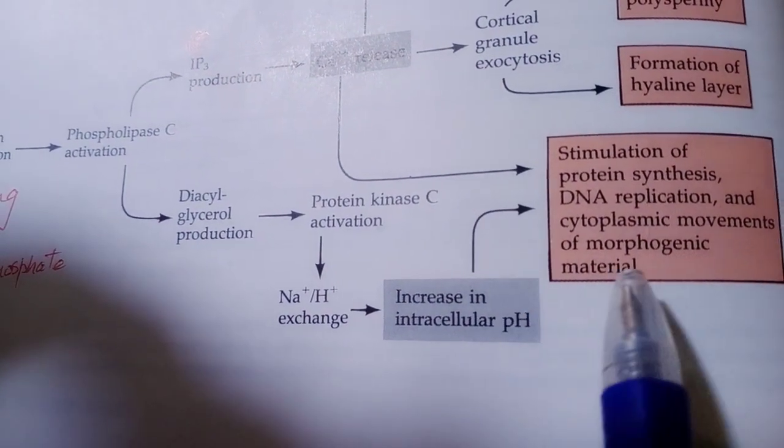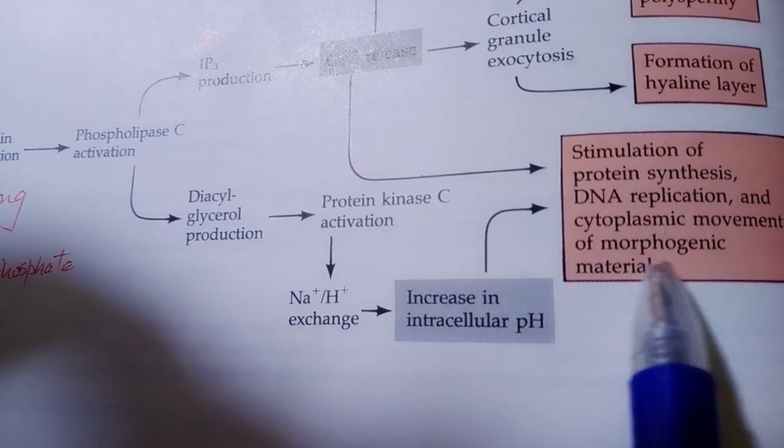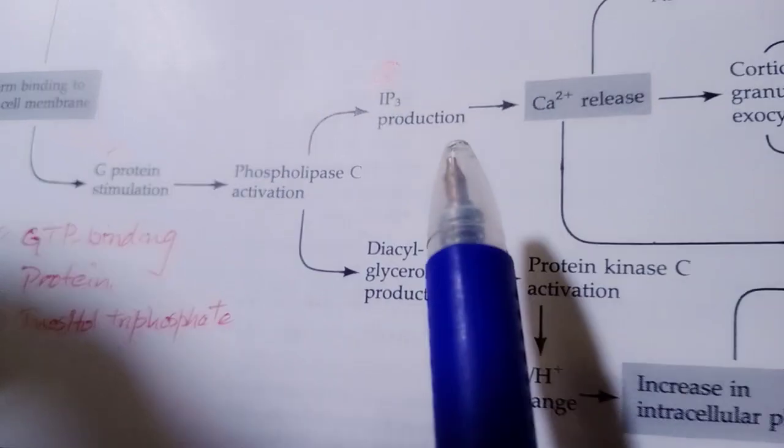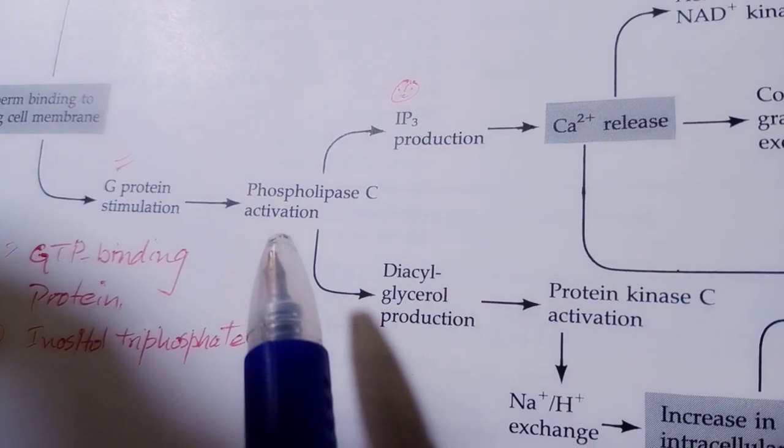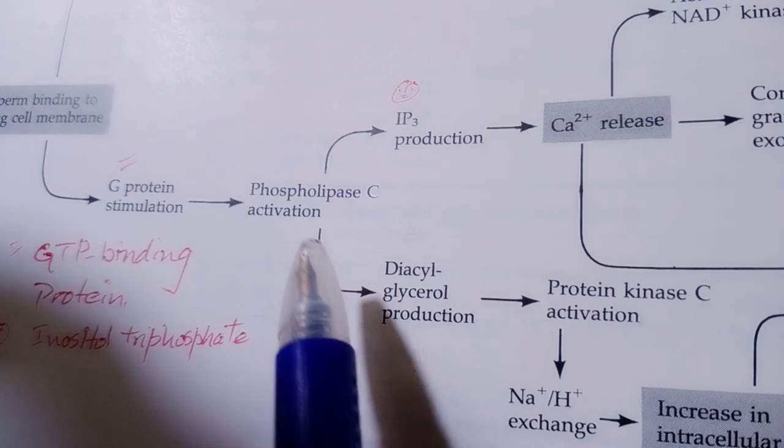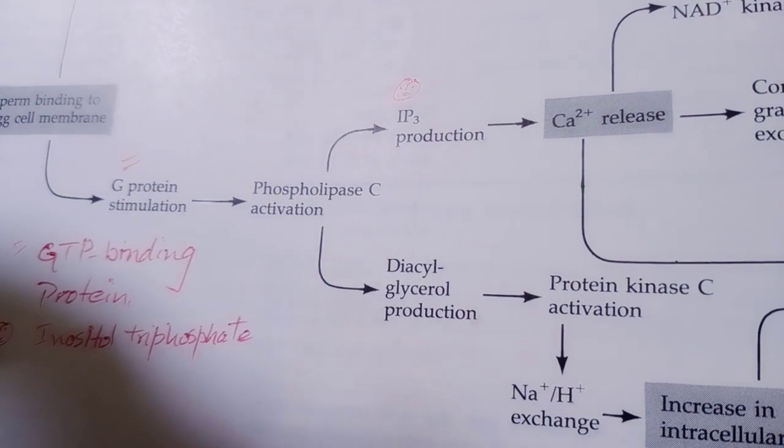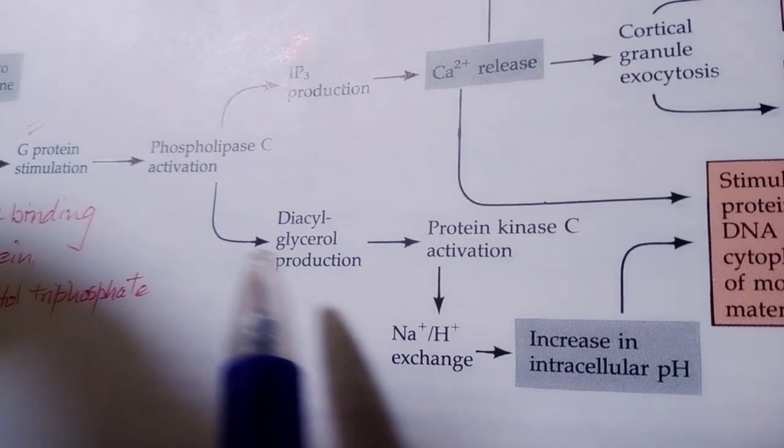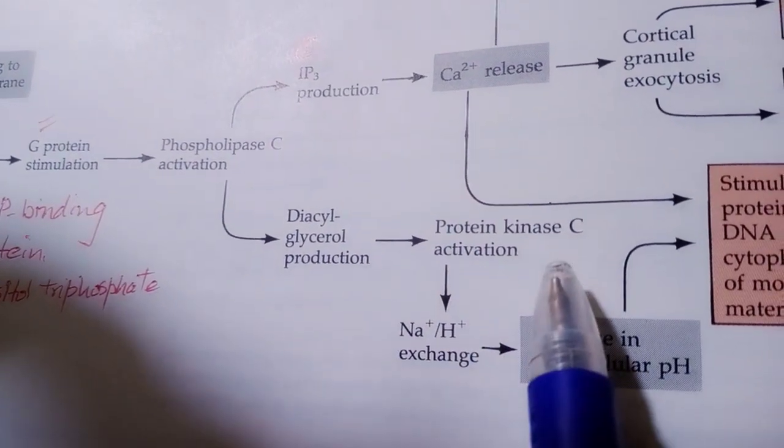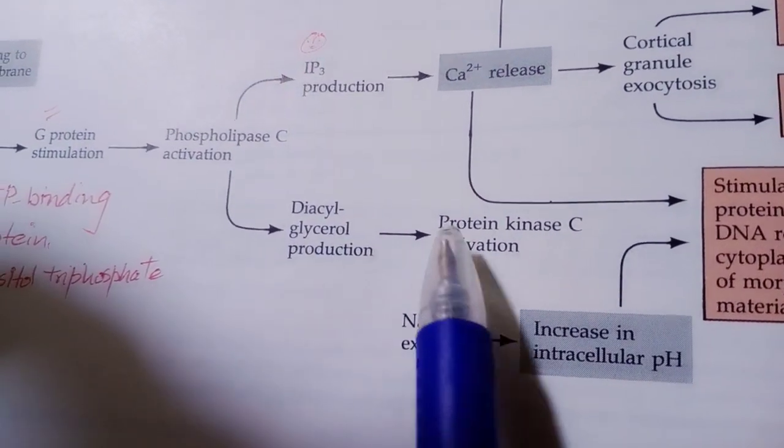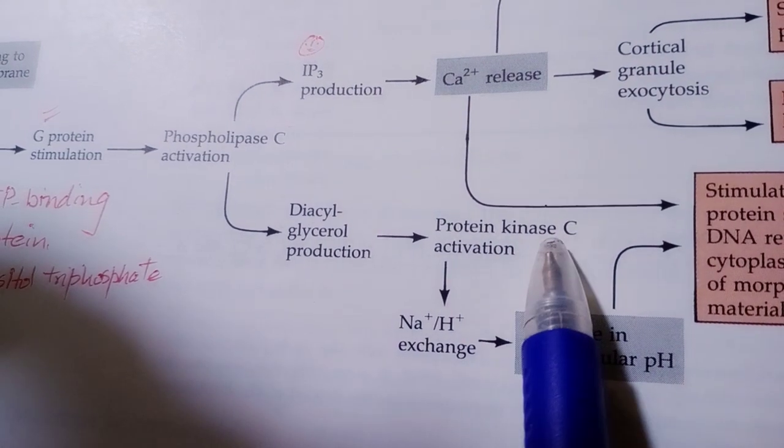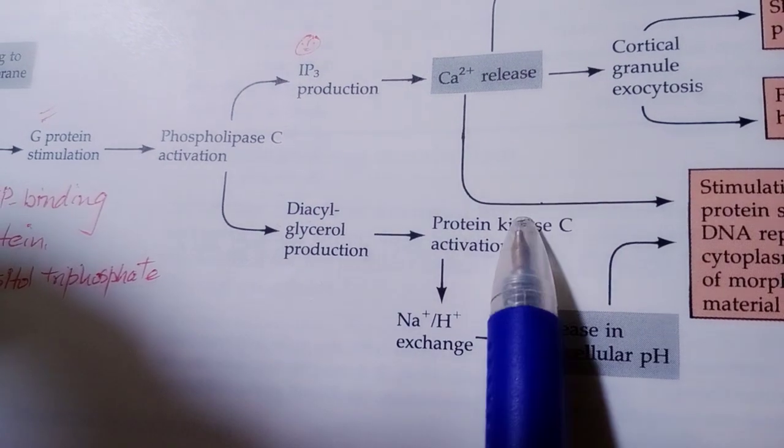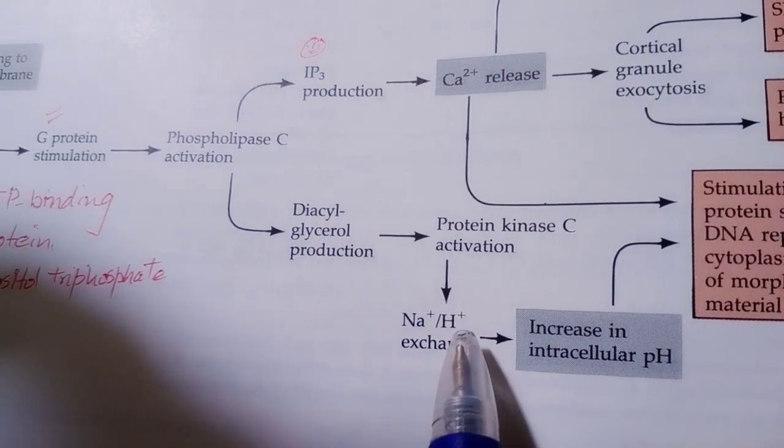The second reaction caused by phospholipase C activation is the production of diacyl glycerol. Diacyl glycerol causes protein kinase C activation. Protein kinase C, in its active form, causes the exchange of sodium and hydrogen ions.